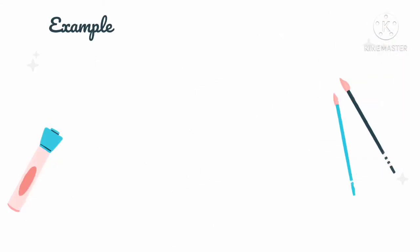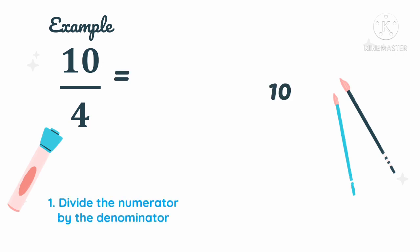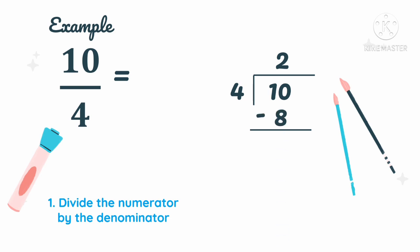Let's have an example in changing an improper fraction to a mixed number. 10 over 4 is an improper fraction. We're going to change this to a mixed number by dividing the numerator by the denominator. So we have 10 as the numerator and we divide it by the denominator 4. How many 4s in 10? We can get two 4s in 10. 2 times 4 is 8. Then subtract: 10 minus 8 is 2.